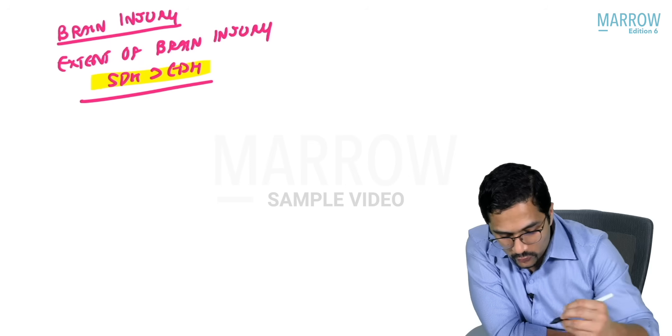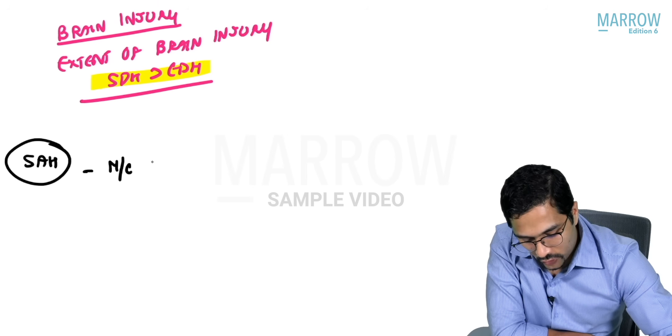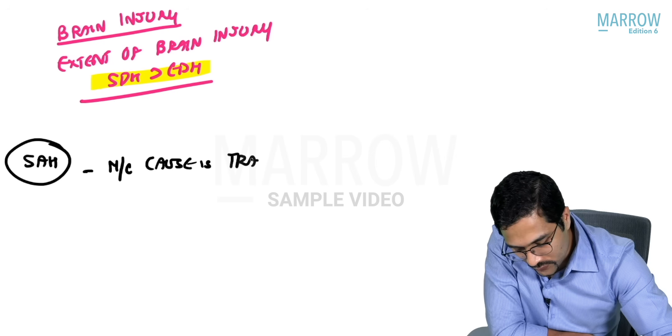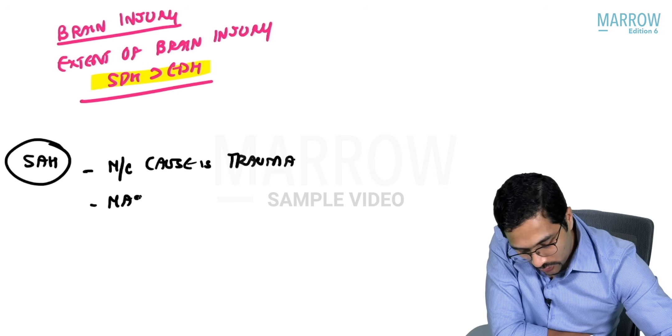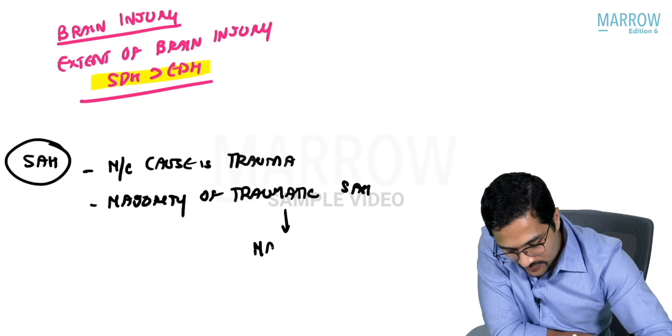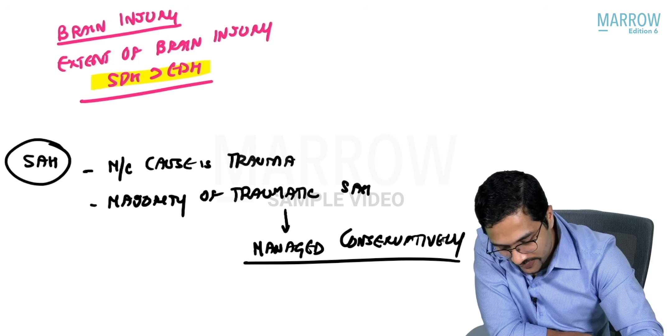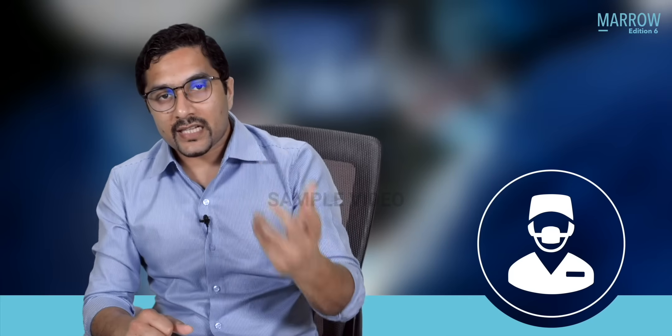Before moving to secondary brain injury, a few points on traumatic subarachnoid hemorrhage. The most common cause of subarachnoid hemorrhage is trauma. However, the majority of traumatic SAH can be managed conservatively. This is very different from spontaneous subarachnoid hemorrhage — for example, from a ruptured berry aneurysm — where you have to surgically clip the vessel. Traumatic SAHs are usually small and the majority can be managed conservatively.